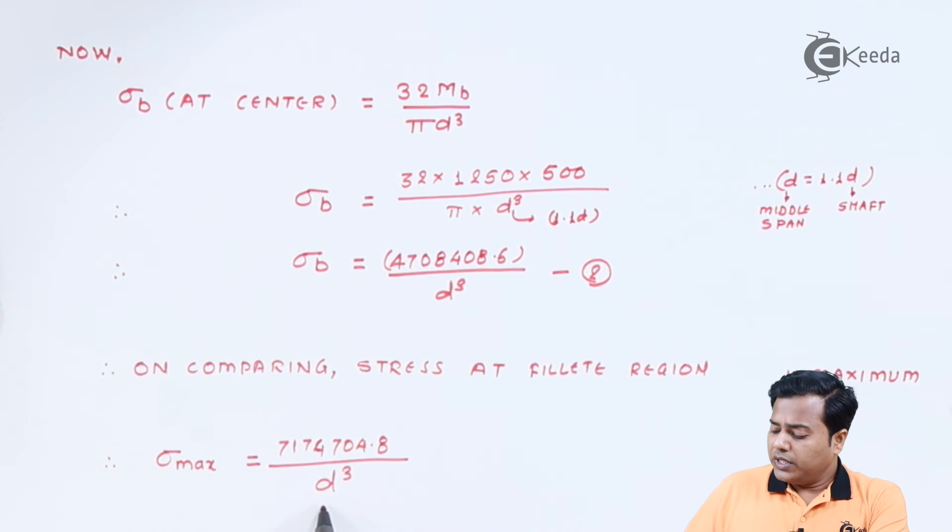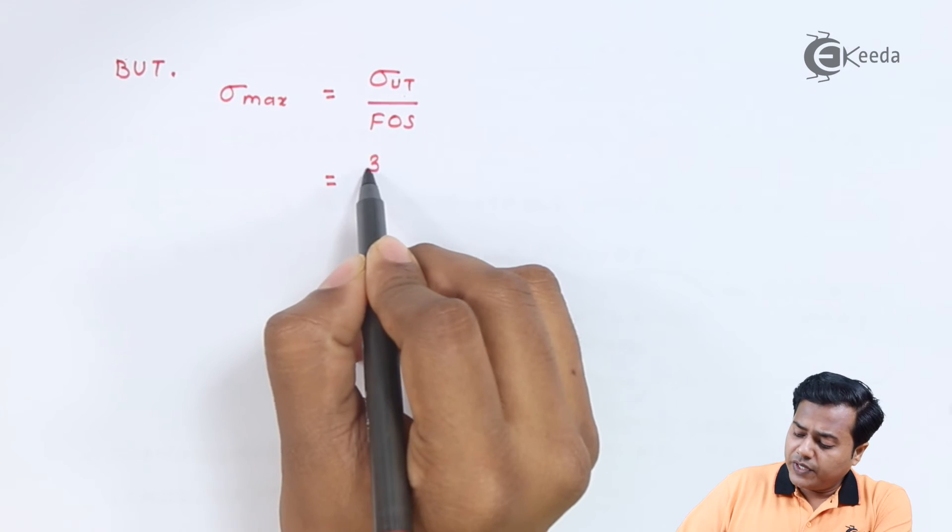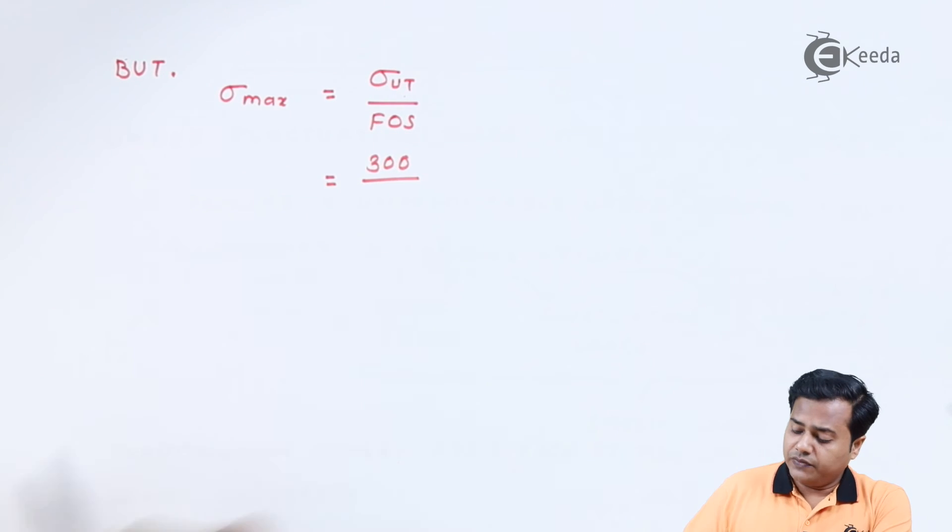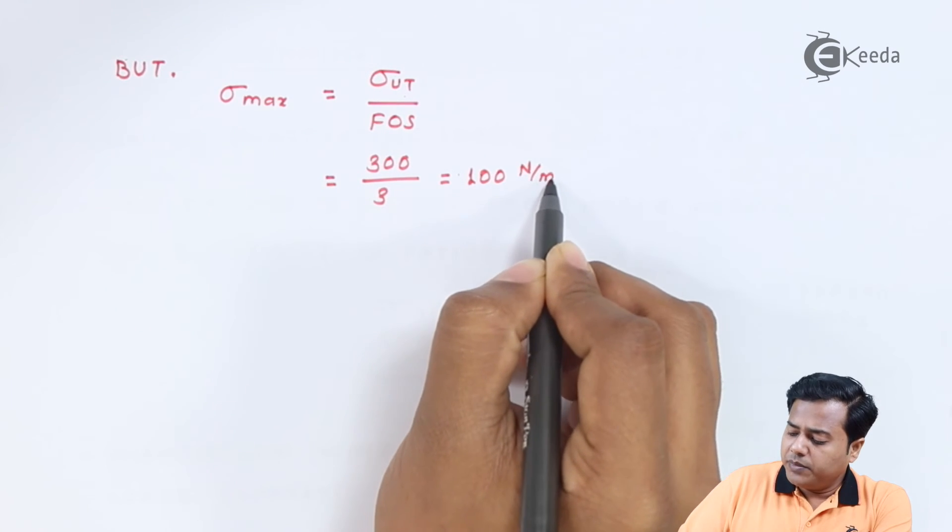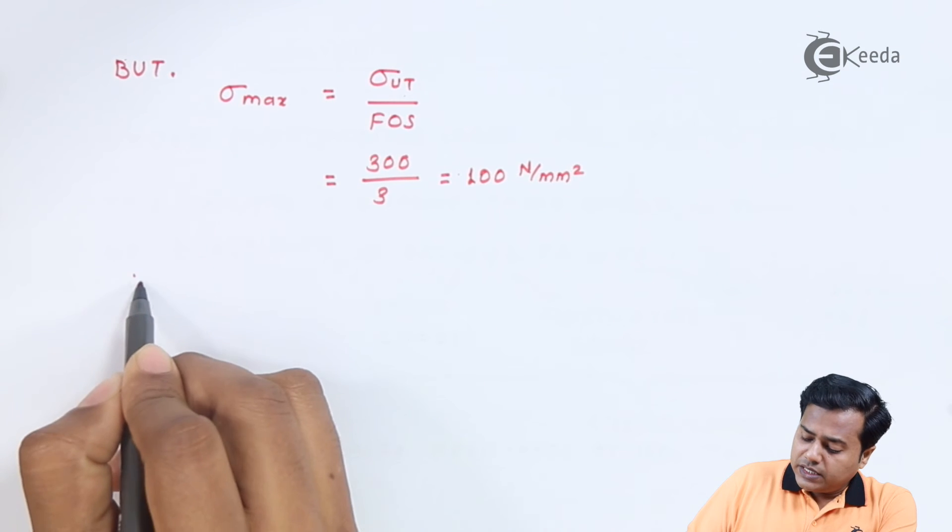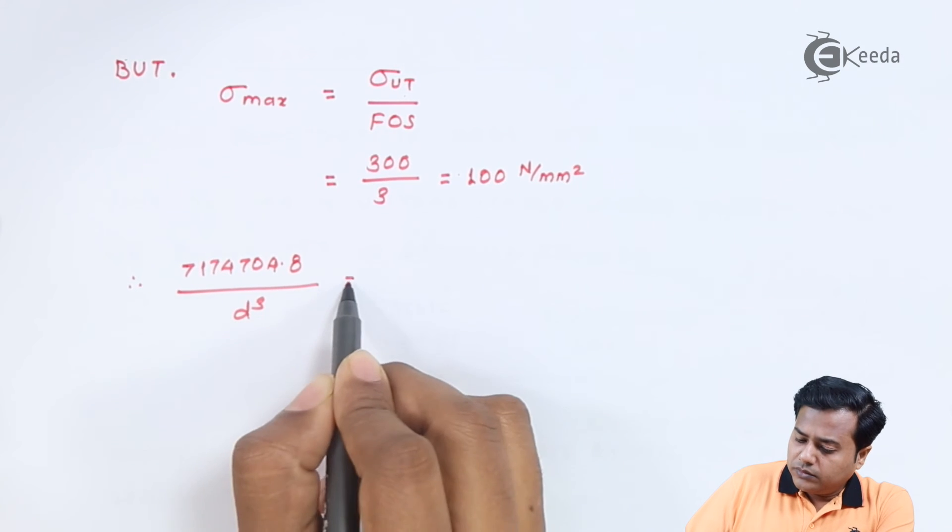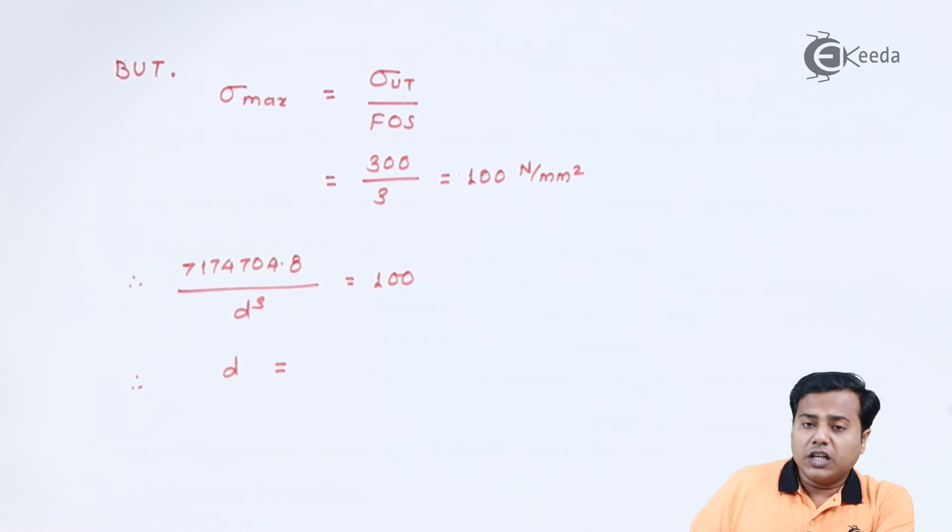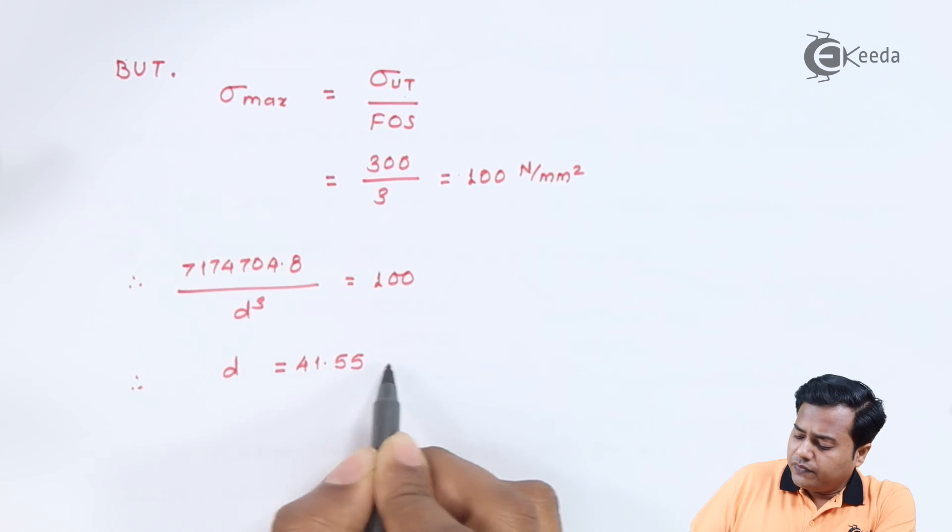Now our purpose is to find out the value of diameter for which the maximum stress can be considered. But students we know that for the given material the maximum possible or the safe stress will be the ultimate stress divided by factor of safety. The ultimate stress we have been given is 300 whereas the factor of safety is 3 which makes it 100 newton per millimeter square and therefore let's equate these two values. Upon solving we will get the answer 41.55 millimeter.